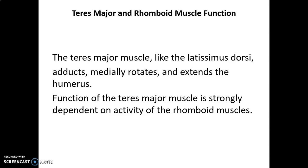The teres major produces the same actions as the latissimus dorsi — adduction, medial rotation, and extension of the humerus — but unlike the latissimus dorsi, it requires the rhomboids to stabilize the scapula first. The latissimus dorsi does not require this because it is one of the largest muscles of the back with a larger moment arm.